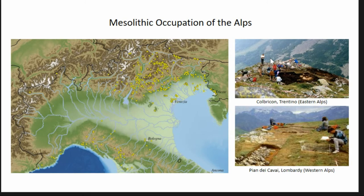The end of the last ice age freed the high altitudes and the whole Alpine arc from a really thick layer of ice, and during that period — between the end of the Pleistocene and the beginning of the Holocene — we see a reoccupation of high altitudes. This is the dataset we have for the Alpine arc: Mesolithic and Paleolithic sites. You can easily see that in the northeast of Italy there is a clear cluster of sites, especially at high altitudes.